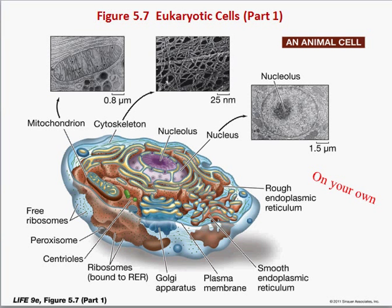Here are the eukaryotic cells. When you look at this, you can see it's a lot more complex. The biggest thing you notice is a nucleus in the center and all these membrane compartments inside. These are the organelles, and we're going to learn about them in a little more detail.